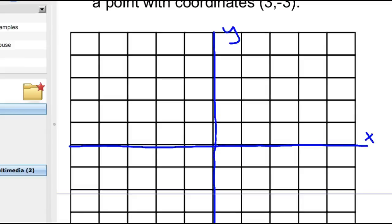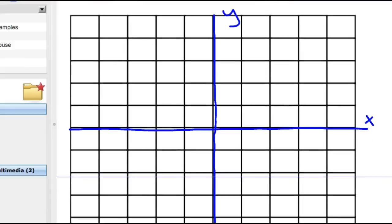And then 3, -3, I'll graph that point. So right 3, 1, 2, 3, down 3, 1, 2, 3, would be right here. So here's our ray to 3, -3. There's our terminal ray.